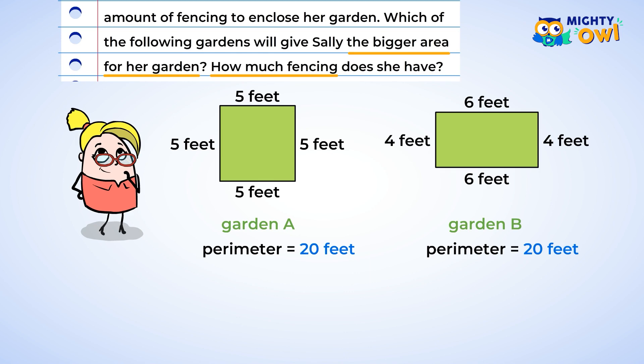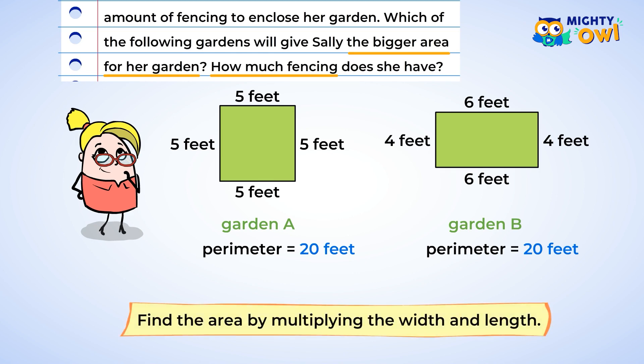Now we can find the area of each of the possible gardens. Since both of the gardens are rectangles, we can find the area by multiplying the width and the length. Garden A: the width is 5 feet and the length is also 5 feet, and 5 multiplied by 5 is 25, so Garden A will have an area of 25 square feet. Now Garden B: the width is 6 feet and the length is 4 feet. 6 multiplied by 4 is 24, so Garden B has an area of 24 square feet.